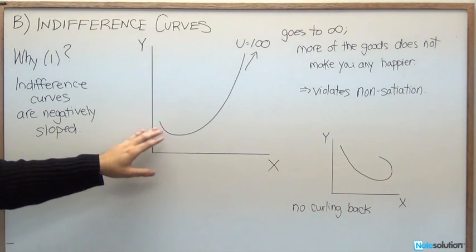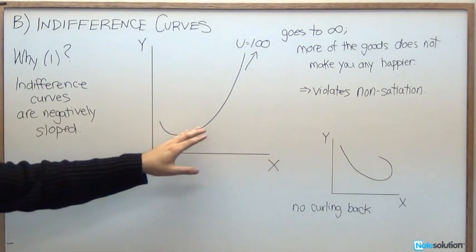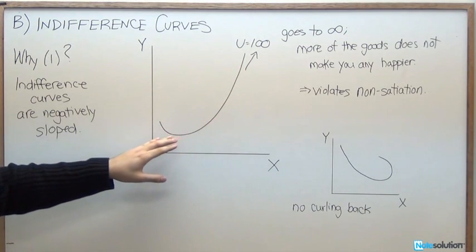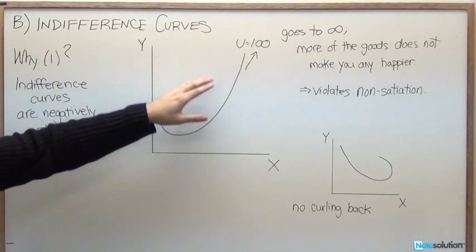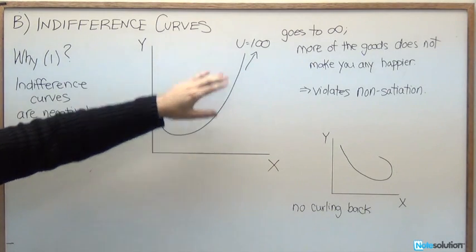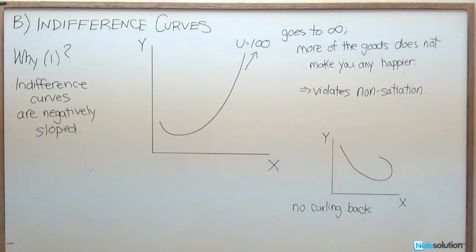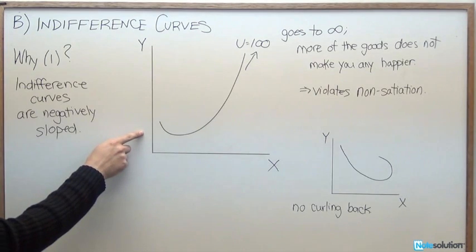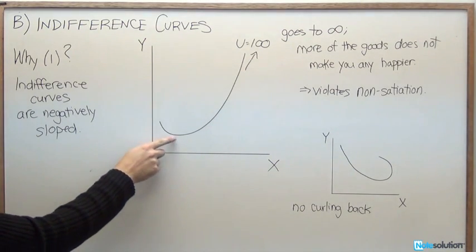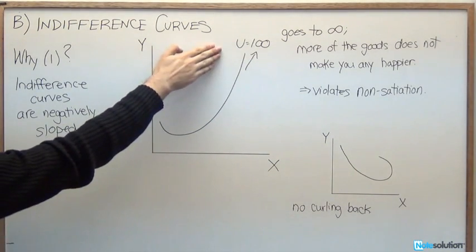In this indifference curve, we can see here that it's actually positively sloped for all of this area here. Everywhere along this line, we're going to get a utility value of 100. If we had 1 unit of good x and 1 unit of good y, that's going to give us a value of 100.